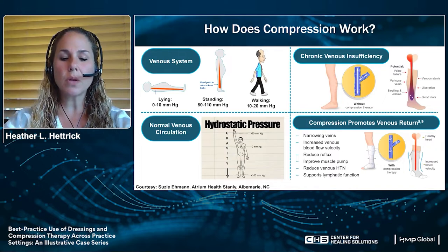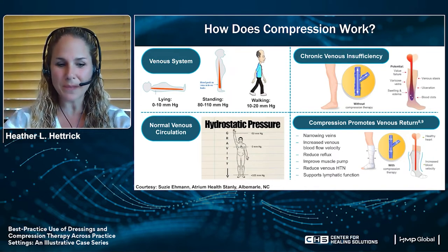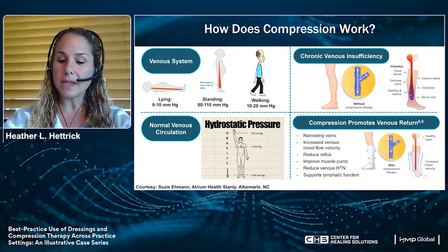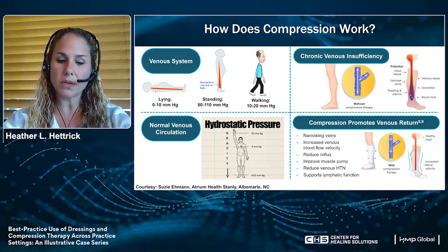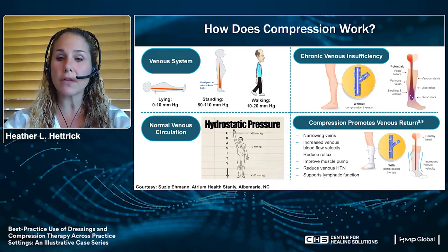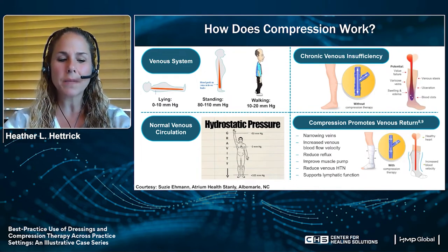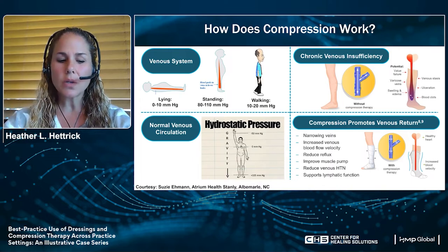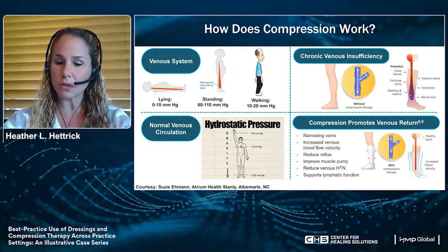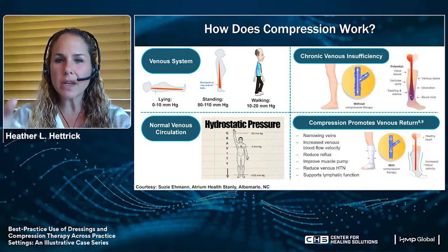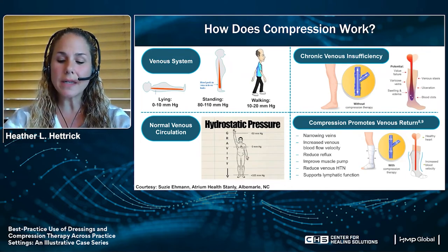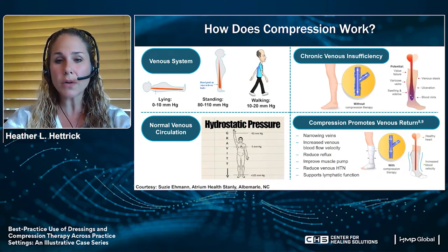How does compression work? The goal is to have a therapeutic effect on the hemodynamics of the limb. Venous pressure diminishes from the periphery to the heart. At the ankle in a standing person it measures 90 to 110 mmHg, depending on gravity and the distance of the heart to the foot. As we move, pressure decreases to about 20 mmHg as long as the system is sufficient. Appropriate therapeutic compression must provide enough external pressure to exceed the hydrostatic pressure in the vein, effectively narrowing the veins and approximating the valves in patients with venous disorders.